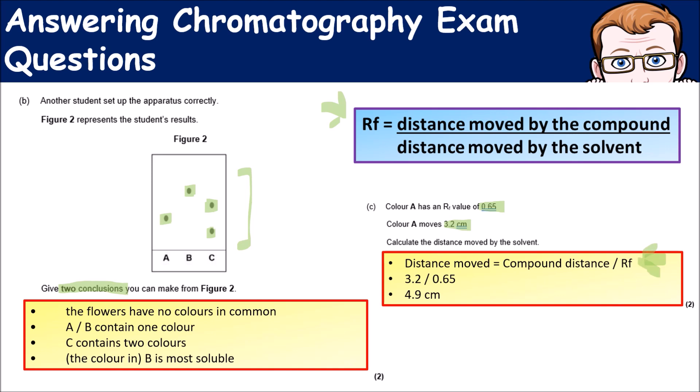This means that the solvent front must be 4.9 centimeters. Make sure that when you're doing that calculation, just double-check it each time and write down your workings out.